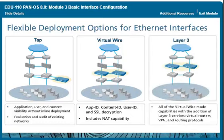And Layer 3. With Layer 3 interfaces, the firewall can take the place of any current enterprise firewall deployment. A unique advantage of the firewall is your ability to mix and match these interface types on a single device. For example, the same firewall can be deployed in Tap mode for one portion of the network and be in Virtual Wire or Layer 3 mode for another.